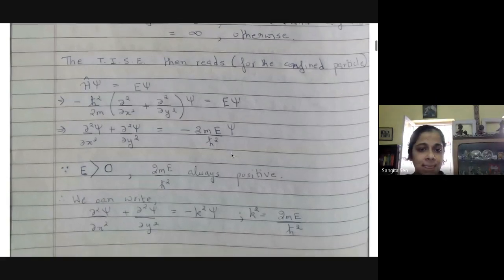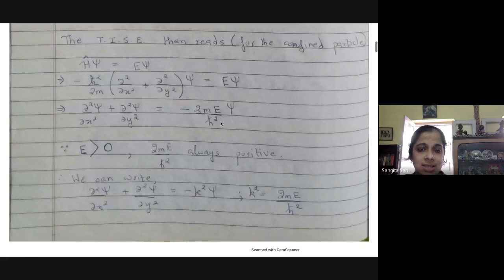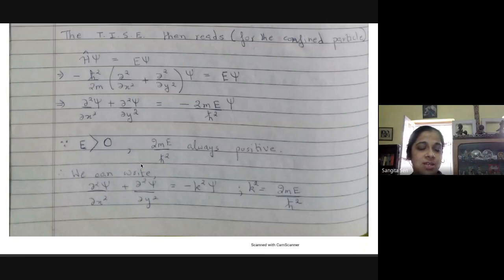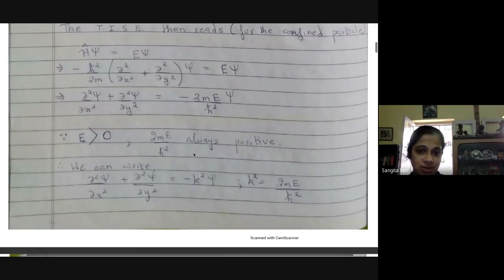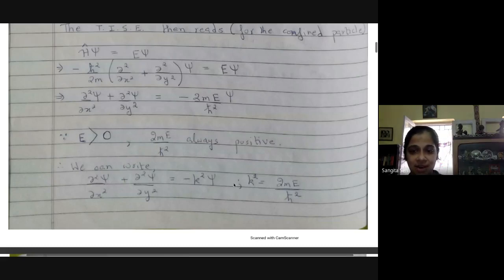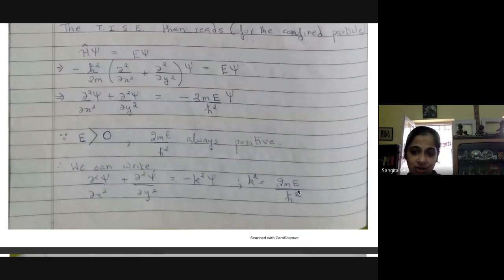Since the energy is always positive, the argument we saw in the one-dimensional case still holds. In the two-dimensional case, 2mE/ħ² is also positive, so I can write this as minus k squared, where k is some constant defined by this relation. This relation will also give me the energy expression as before.